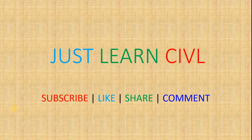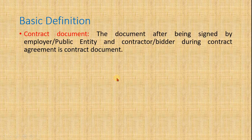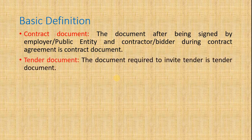Welcome to Jocelyn Sibyl. This is the second tutorial on contracts. We will learn about the difference between tender documents and contract documents. Contract documents are those documents which are signed by both parties — the employer and the contractor — and when they sign, that becomes the contract document. Most contract documents are imported from the tender document. Tender documents are prepared during the invitation of the tender by the public entity, but signed only by the public entity, not by the contractor.